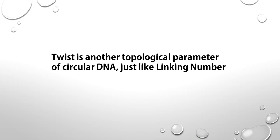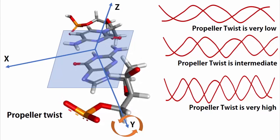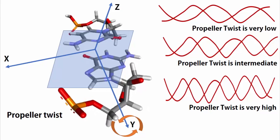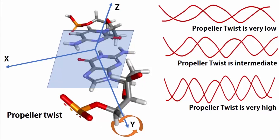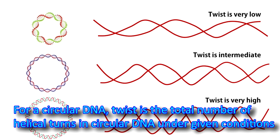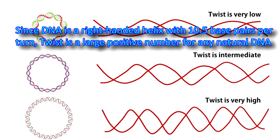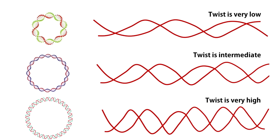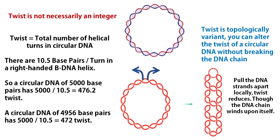Twist is another topological parameter of circular DNA, just like linking number. Remember the base pair parameter propeller twist? That parameter represents rotation of one base with respect to the other along the y-axis, and higher propeller twist reflects a higher helical twist of a DNA molecule. Twist is the total number of helical turns in circular DNA under given conditions. Since DNA is a right-handed helix with 10.5 base pairs per turn, twist is a large positive number for any natural DNA. Note that twist is not necessarily an integer — for example, a circular DNA of 5000 base pairs has a twist of 5000 divided by 10.5, which is approximately 476.2.